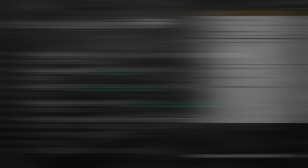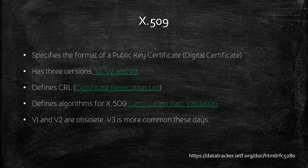I mentioned the word X.509 in my previous slide. Now X.509 is a standard by ITU, International Telecommunication Union, which defines the format of a certificate. X.509 was first introduced in 1988 as X.509 version 1. This version was later revised as version 2 and then version 3. Version 3 certificates are most common these days. RFC 5280 specification of X.509 certificates also describes CRL and certification path. I'll explain what they are later in this video.